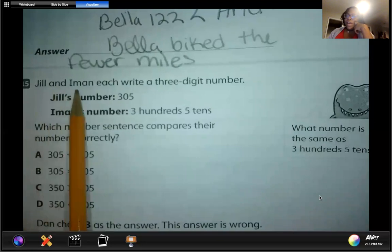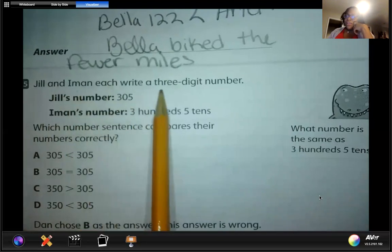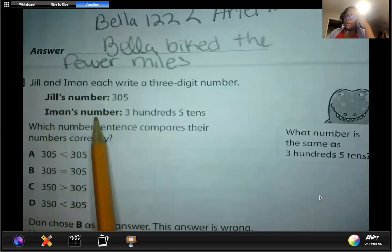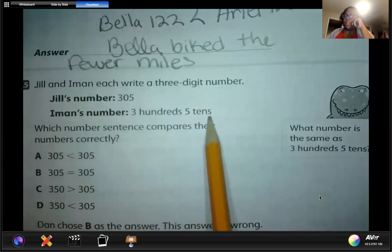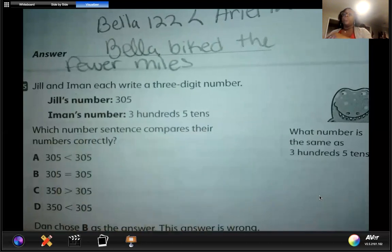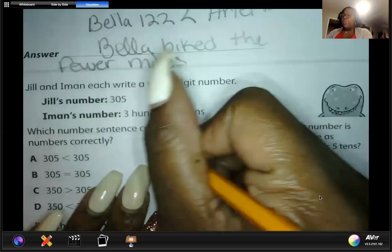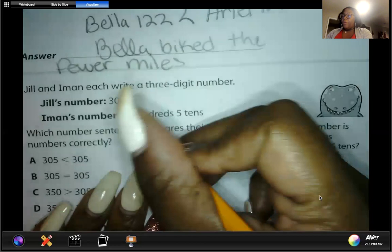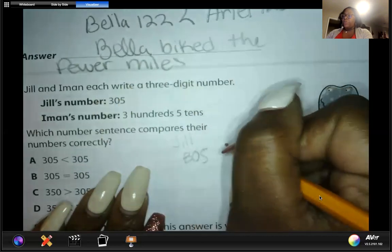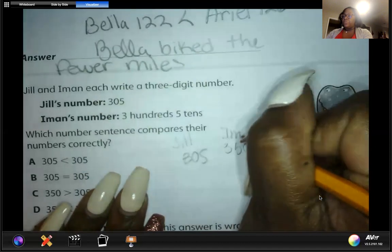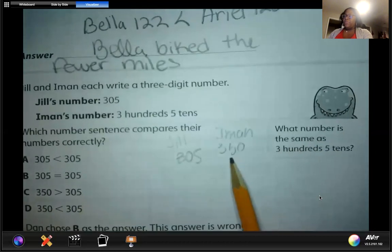Jill and Ayman each write a three-digit number. Jill's number is 305. Ayman's number is three hundreds and five tens. Which number sentence compares their numbers correctly? First, let's write out what Ayman's number is. Jill has 305, but Ayman has three hundreds and five tens, which is 50, so he has 350. She has 305.